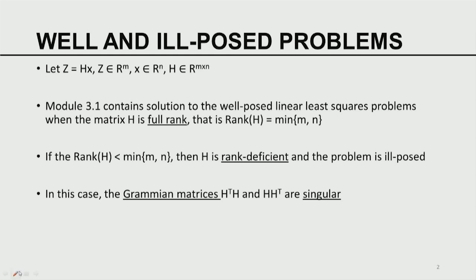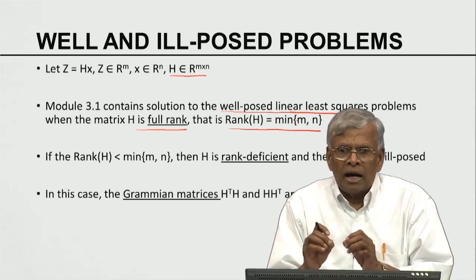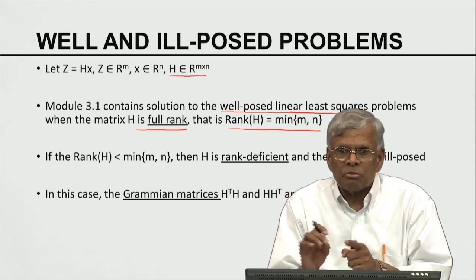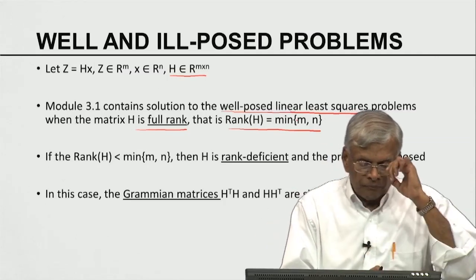Z is equal to H of X is the linear least square problem. H is the matrix which is M by N. In module 3.1, we already talked about the well-posed linear least squares problem. The well-posed problem essentially banks on the assumption that H is full rank — that means the rank of H is the minimum of M and N. In the overdetermined case the rank of H is N; in the underdetermined case the rank of H is M. We have considered both cases under the rule of H being a matrix of full rank.